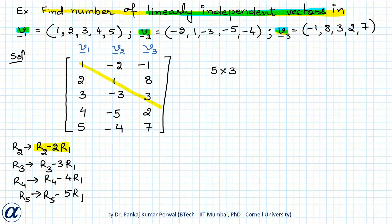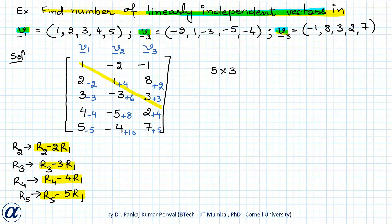R2 minus 2·R1 gives: minus 2 plus 4, plus 2. R3 minus 3·R1 gives: minus 3 plus 6, plus 3. R4 minus 4·R1 gives: minus 4 plus 8, plus 4. And R5 minus 5·R1 gives: minus 5 plus 10, plus 5.